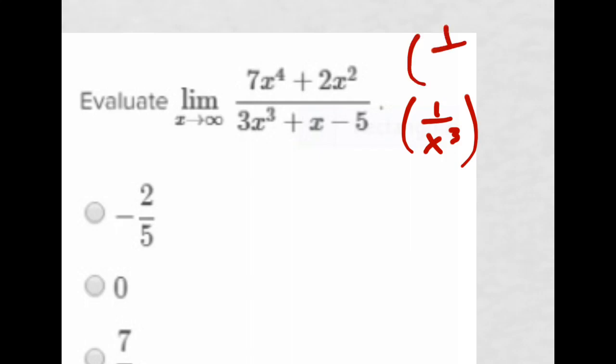I'm going to do that in the top and the bottom. That doesn't change anything, but that's the trick—multiply by 1 over the highest power from the denominator. You do it to both top and bottom. I don't do 1 over x to the fourth in the top because I'm only concerned with the denominator.